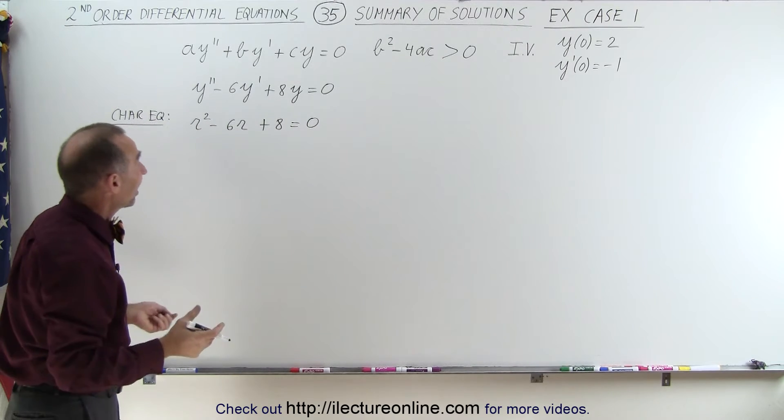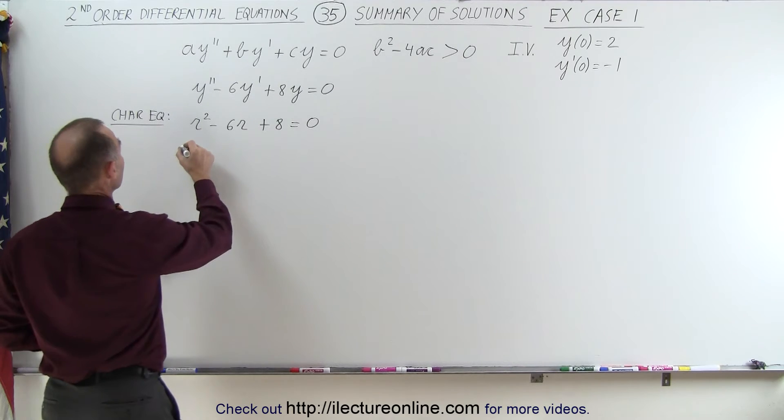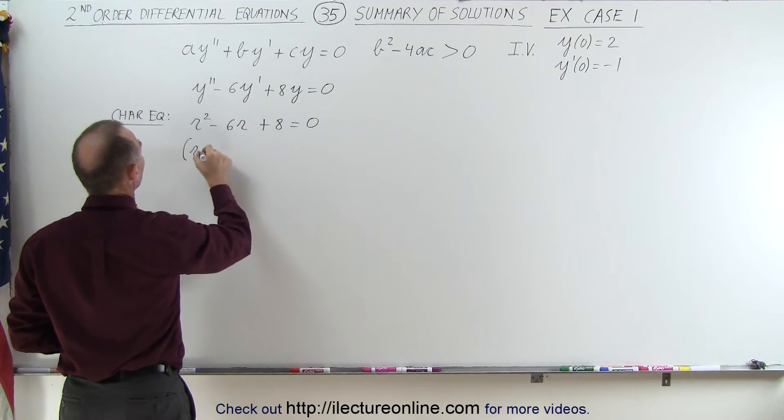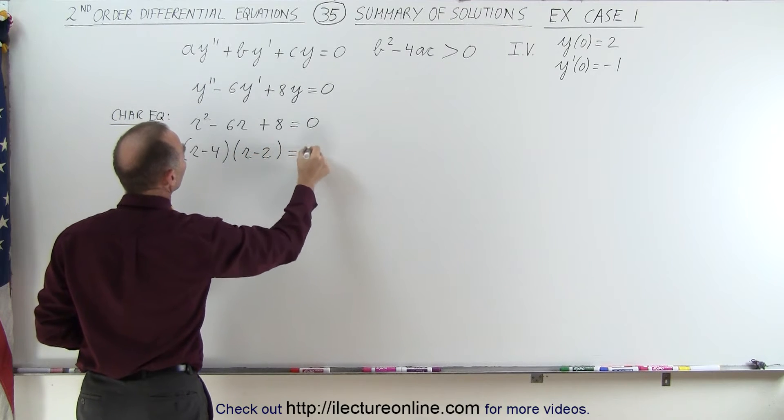And in this case it looks like we can actually even factor this. Yes, we can. This looks like r minus 4 times r minus 2 is equal to 0.